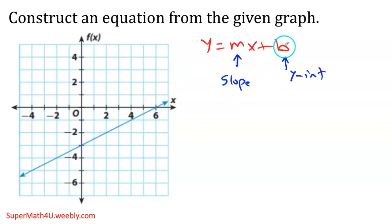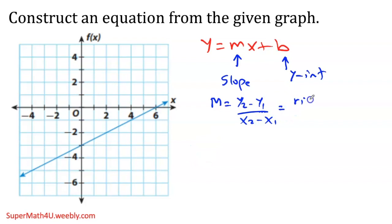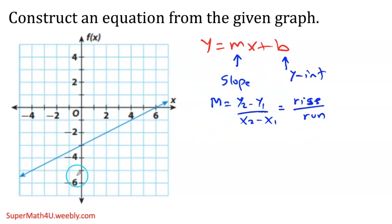The slope is m, which equals y2 minus y1 over x2 minus x1. Another way is rise over run. To find the slope, that's the first thing I do. I'm going to use two points from the graph.